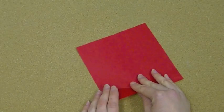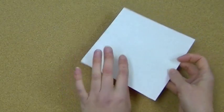All you need for this project is just one piece of origami paper. And you want to start with your color side facing down.